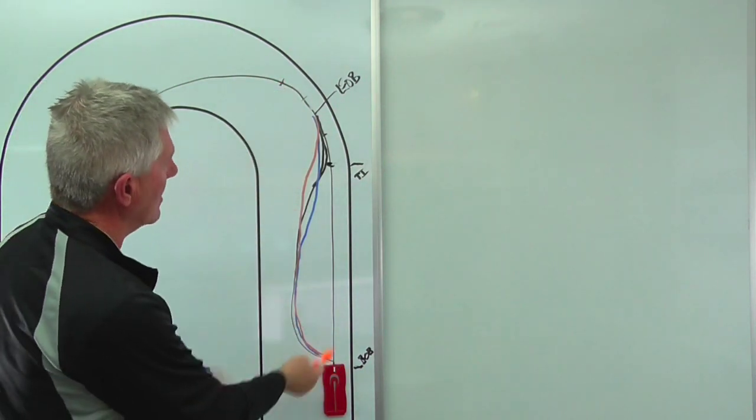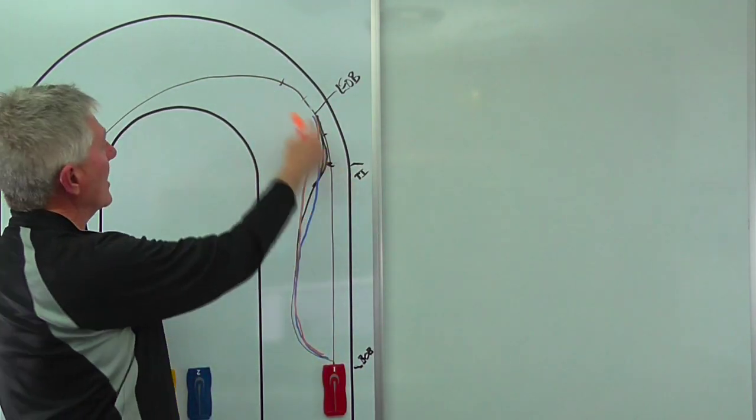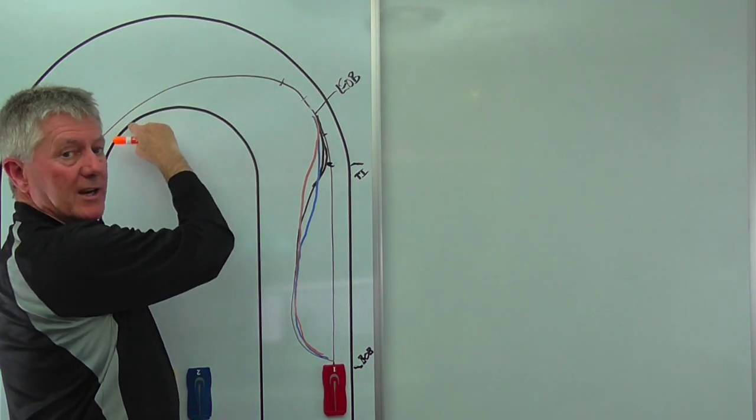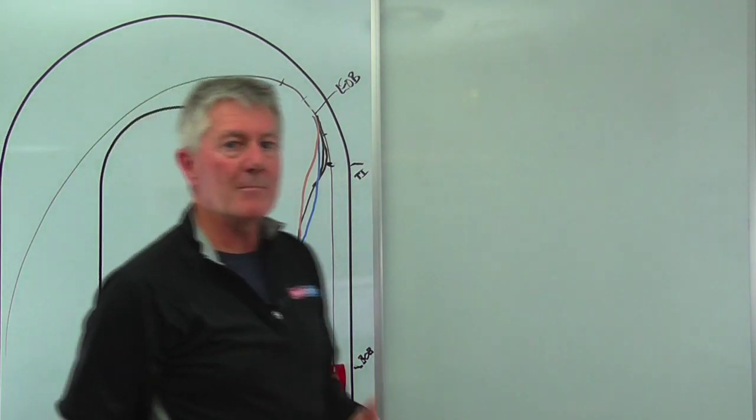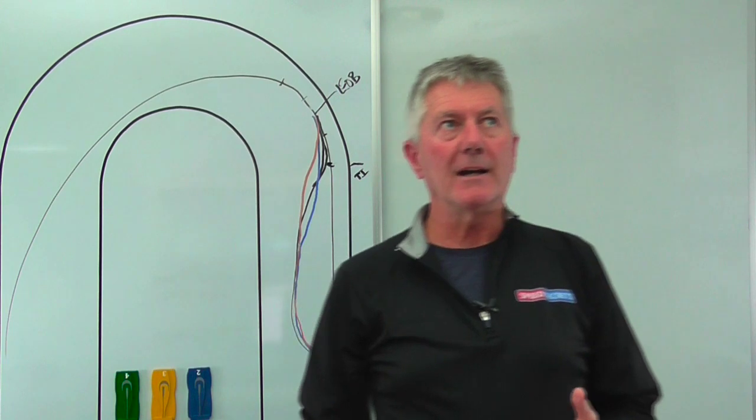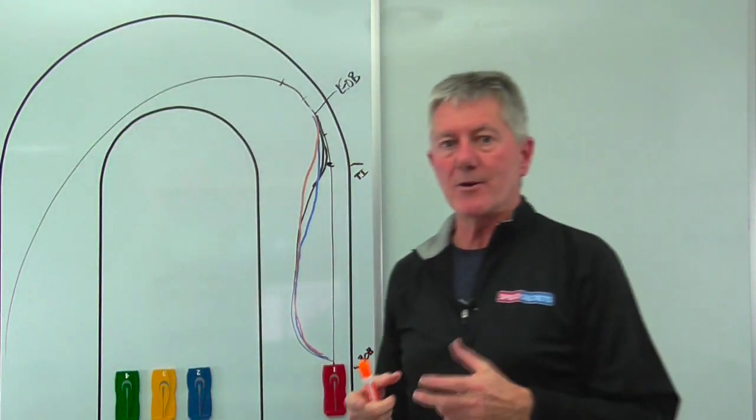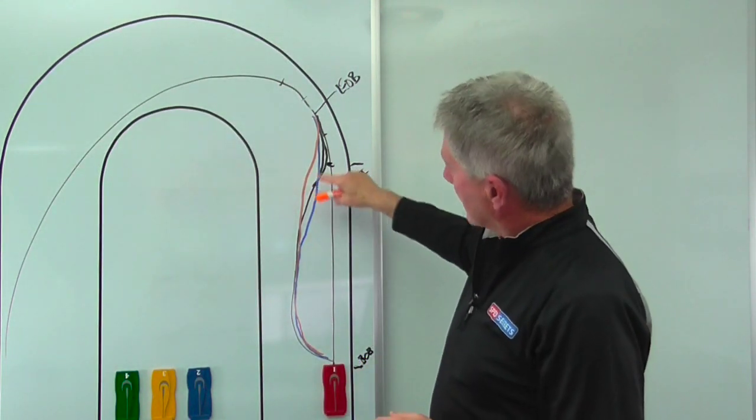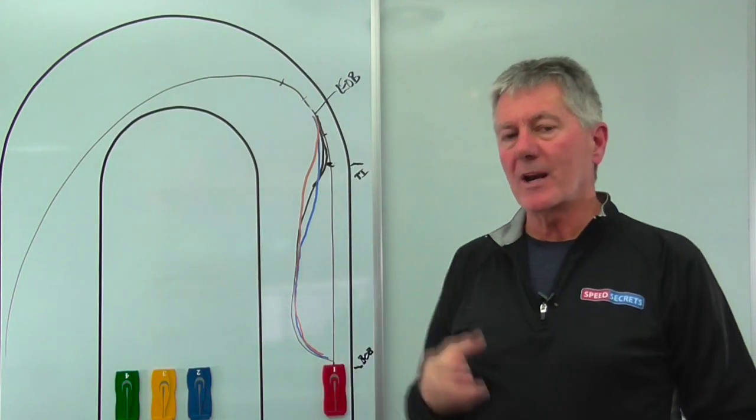The only way you can do that is if your eyes and your mind are down here when you're back here. Now obviously when you're here, you're already starting to think around and look around over to here. But you're really managing your corner entry speed in this last little bit here with the timing and rate of release of the brakes.